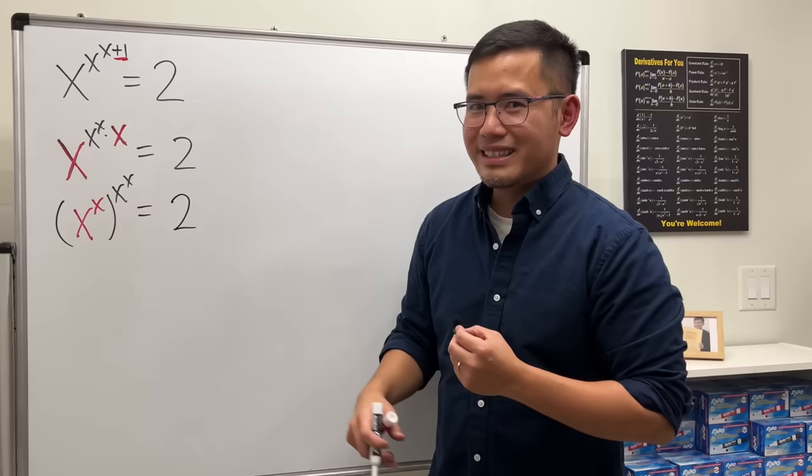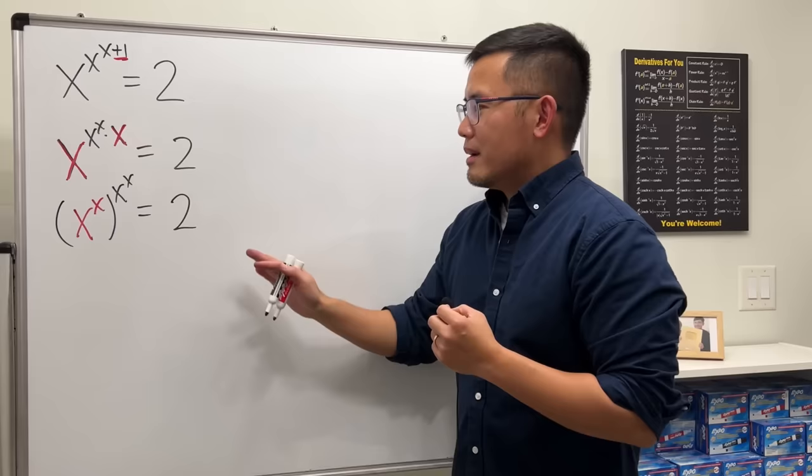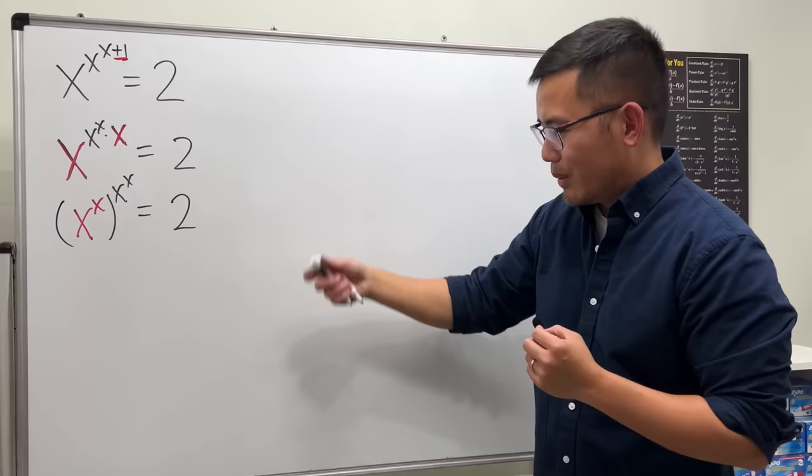Very interesting. Now, do you recognize that this is actually something we can solve by using the Lambert W function? Because this and that are the same thing. It's like u to the u equals 2. So let's see how we can do it.